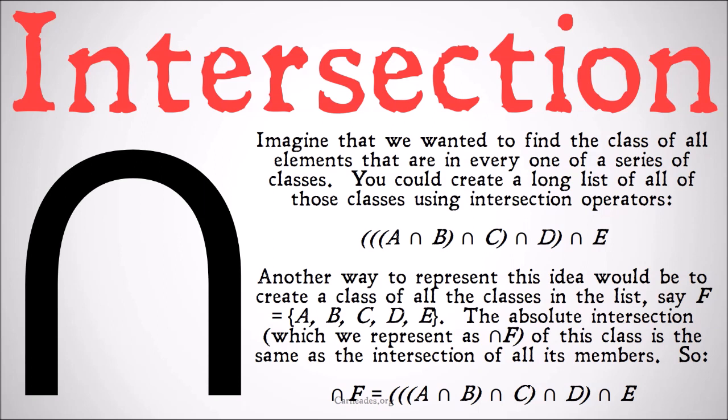But another way to represent this idea would be to create a class of all the classes in that list, call it F, and define F as the class of A, B, C, D, and E. The absolute intersection — which we'll represent as the intersection of F — of this class is the same as the intersection of all of its members. So the intersection of F simply equals the intersection of A, B, C, D, and E all put together.